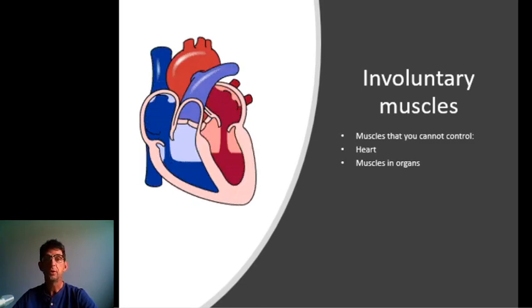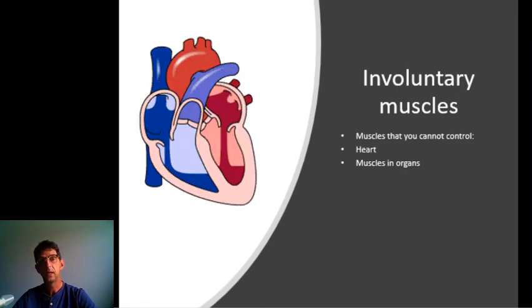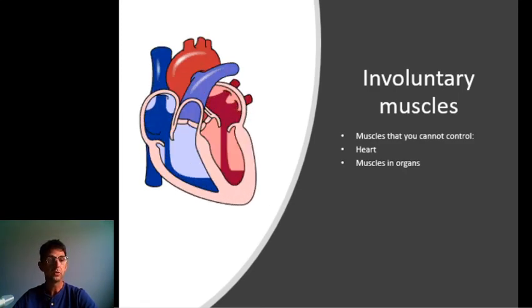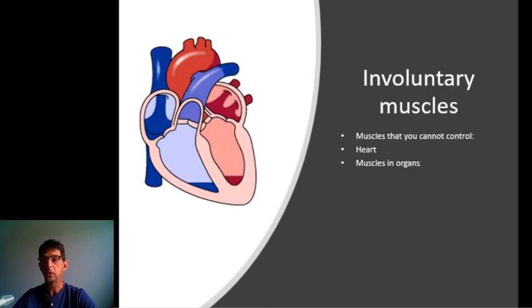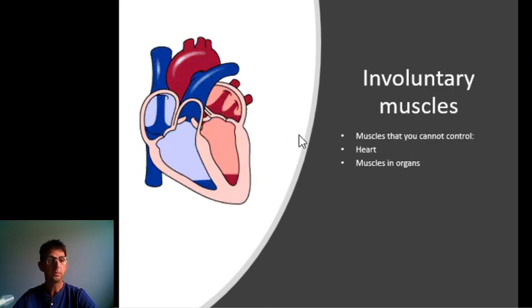Voluntary muscles you can control. To summarize: antagonistic muscle pairs work together because muscles can only contract. That's it for today.